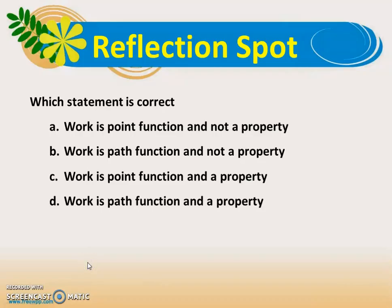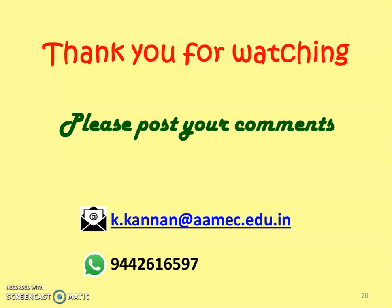We stop here. This is the question you have to answer from this lecture: which statement is correct? (A) Work is a point function and not a property. (B) Work is a path function and not a property. (C) Work is a point function and a property. (D) Work is a path function and a property. The correct answer is option B — work is a path function and not a property of the system. Thank you for watching. Please post your comments in the comments box. We will meet again in another video lecture for work transfer. Until then, bye.